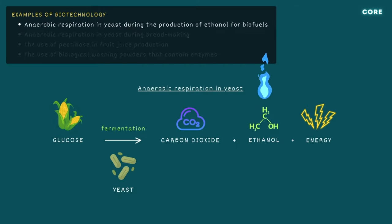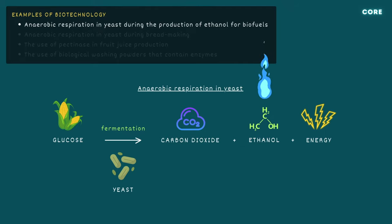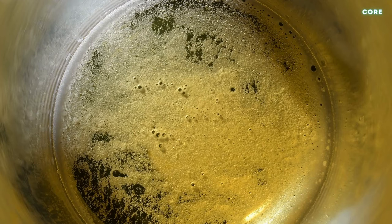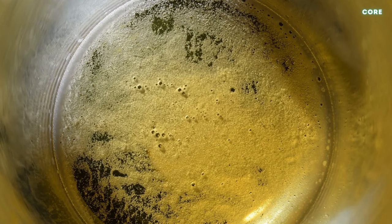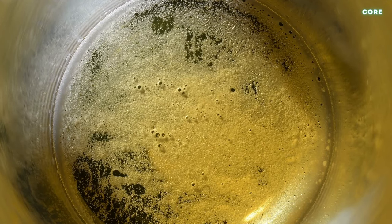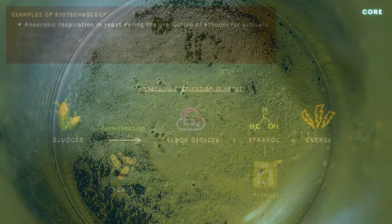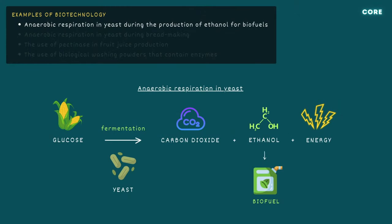Yeast cells derive their energy through anaerobic respiration, whereby glucose is broken down to release energy, and the byproducts of carbon dioxide and ethanol, which is highly flammable. Biofuels are produced by fermenting large quantities of sugar or grain, and then extracting and refining the ethanol. Ethanol releases fewer harmful emissions than petrol does, and is renewable, since the plants from which it's produced can be regrown.